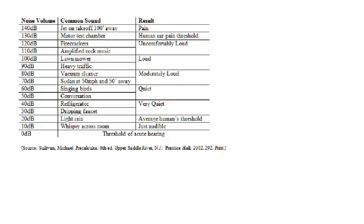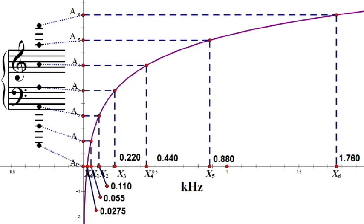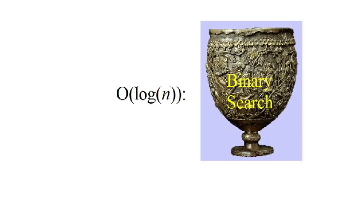If you want to understand volume in decibels, then you'll need a log base ten just like the Richter scale. Relating pitch to frequency base two gets the detail. And algorithms of order log n are a computer scientist's holy grail.